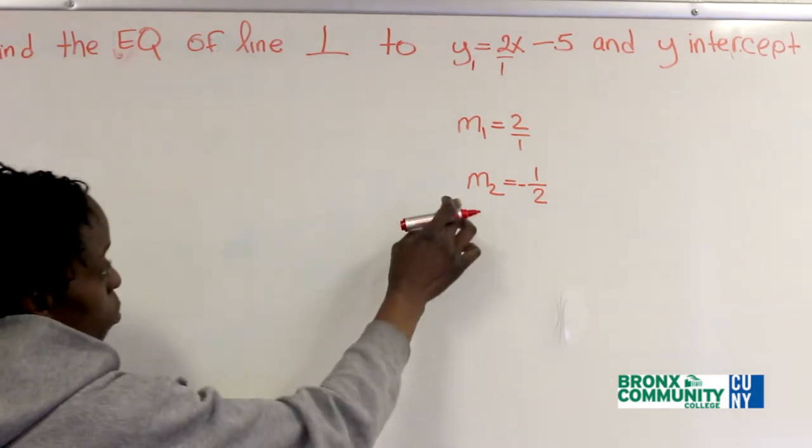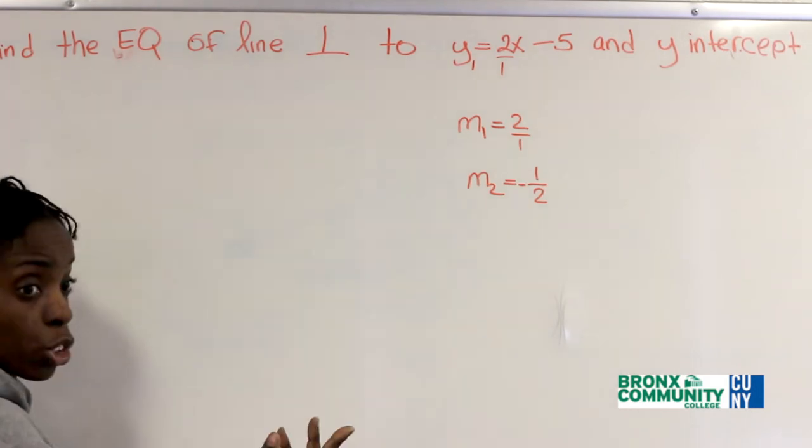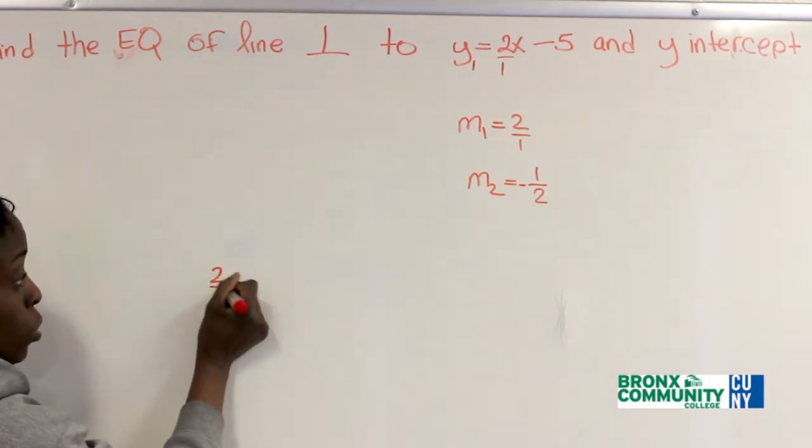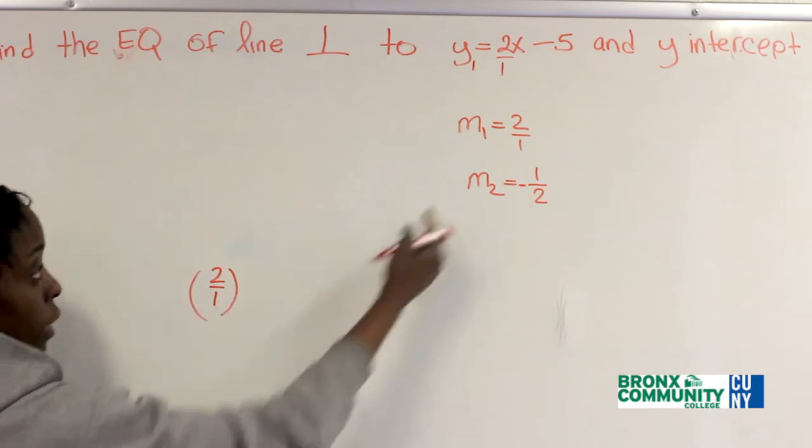You also know, because if you multiply these two together, you should get negative 1. So let's do that. 2 over 1, right? That's for M1.